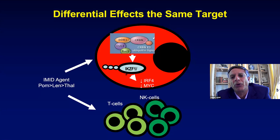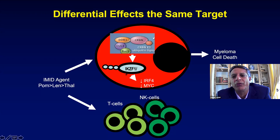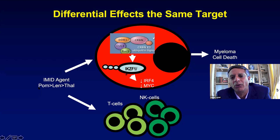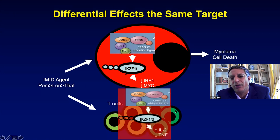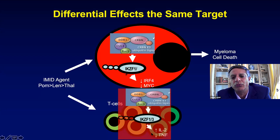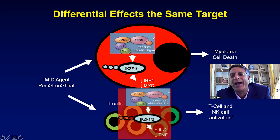Ikaros and Aiolos are two important proteins that are a consequence of binding cereblon. When you do that in a myeloma cell, you downregulate proteins called IRF4 or MYC, and that downregulation results in myeloma cell death — part of the reason why thalidomide, lenalidomide, and pomalidomide are effective in treating myeloma. Those same targets are also present in NK cells and T cells, and when you target cereblon and downregulate Ikaros and Aiolos in immune cells, you upregulate IL-2 and downregulate TNF, activating T cells and NK cells.